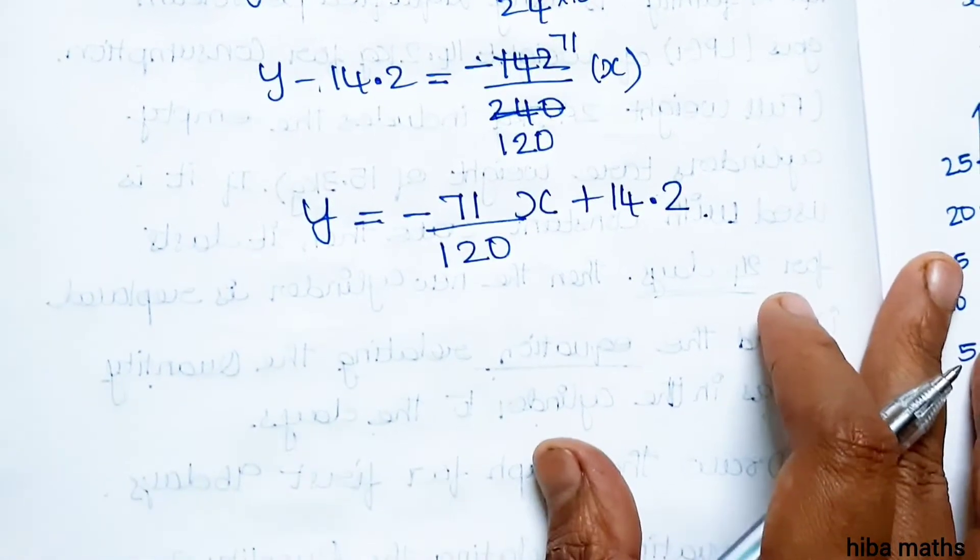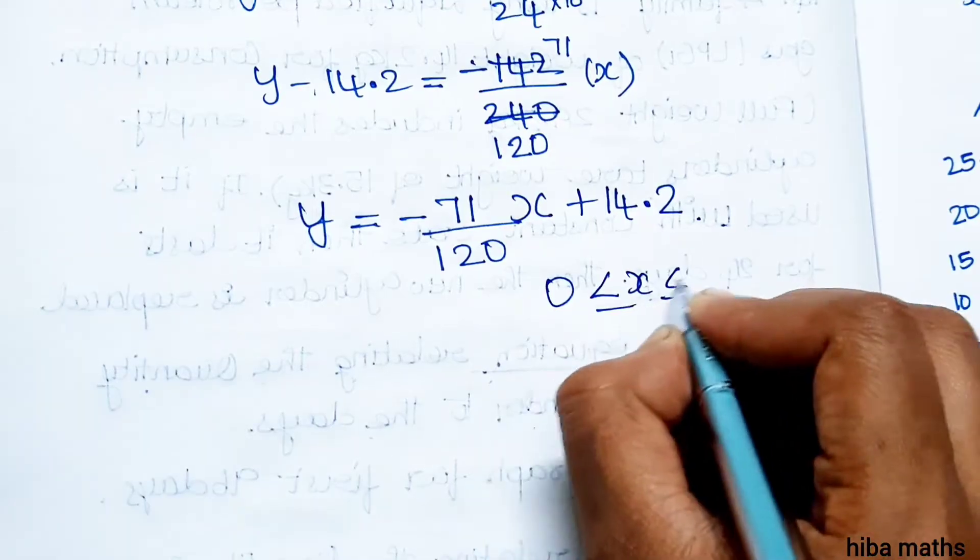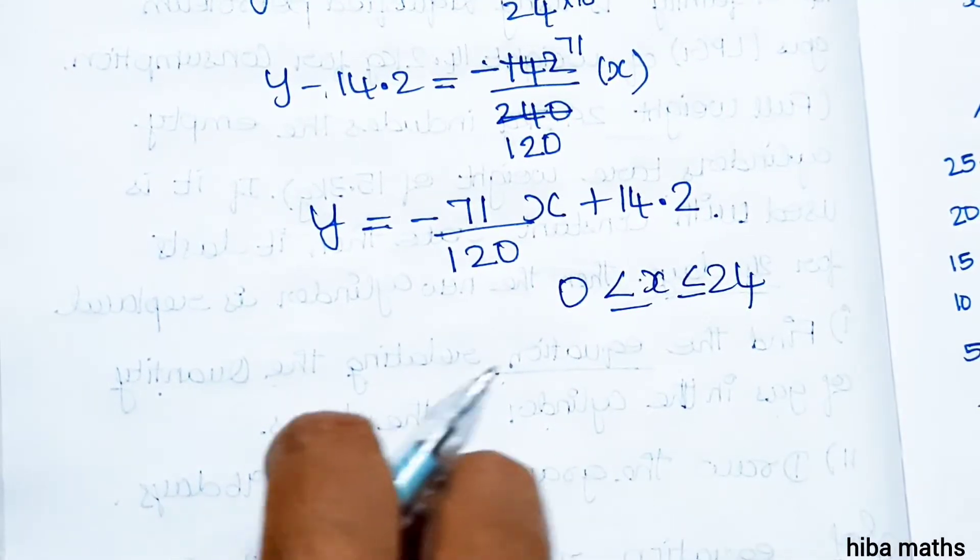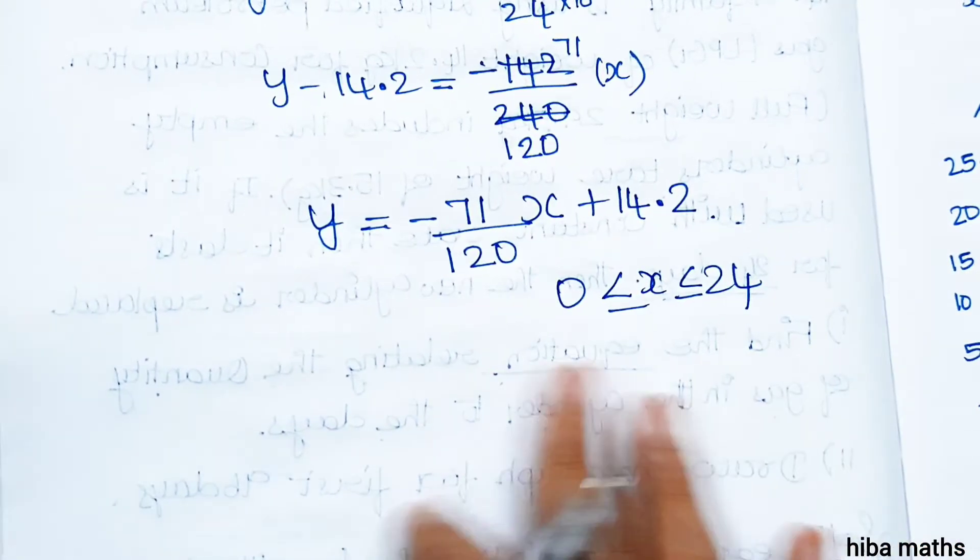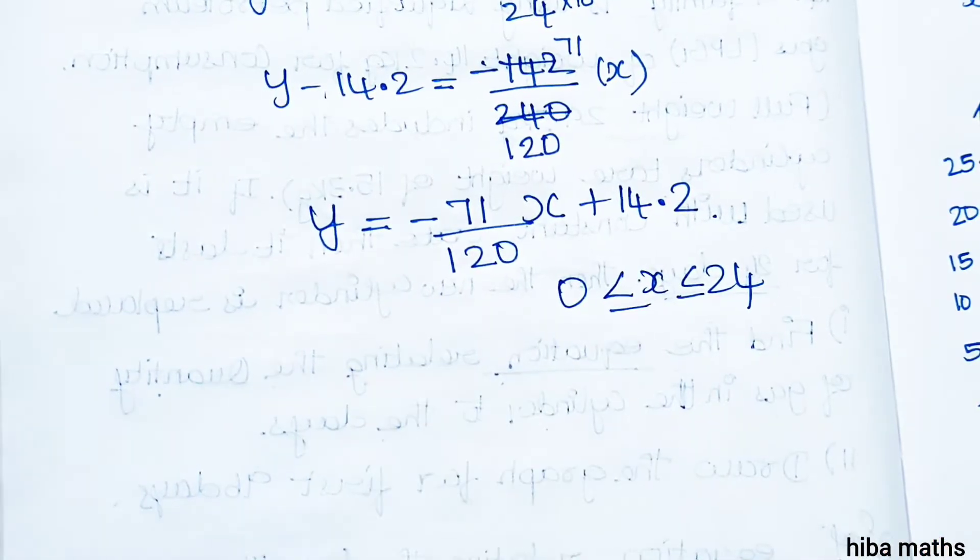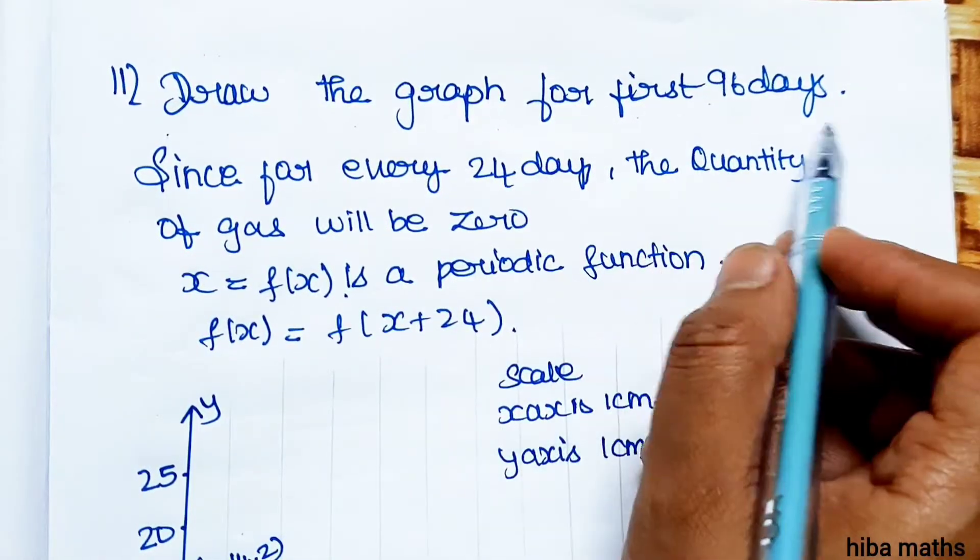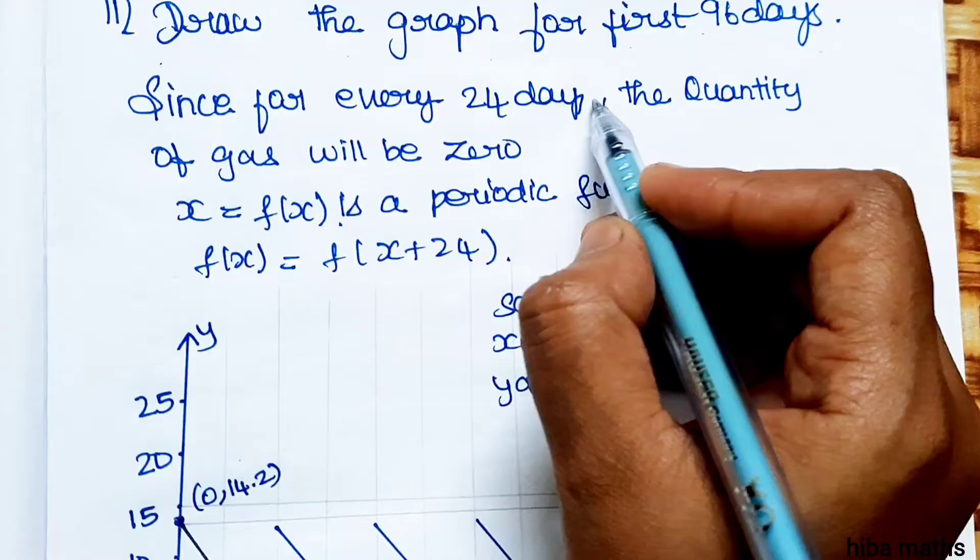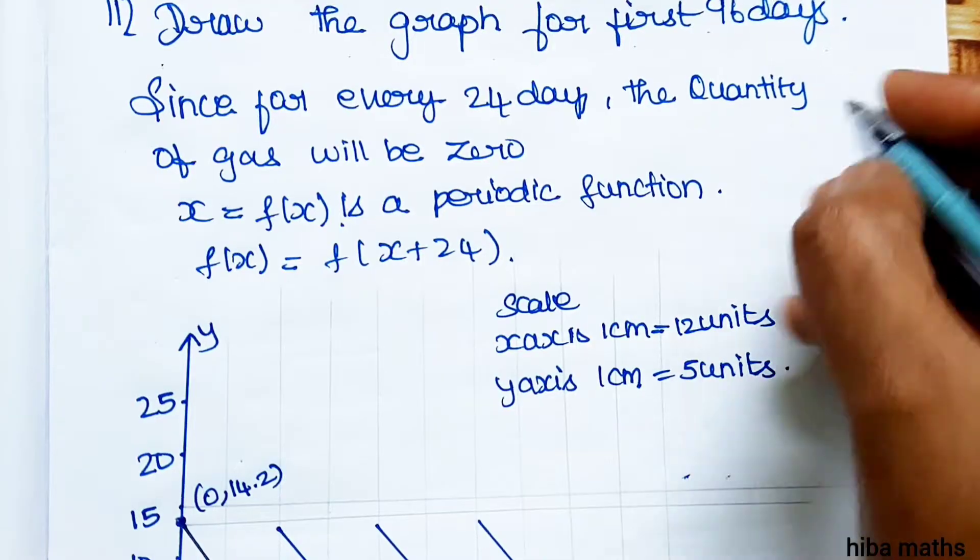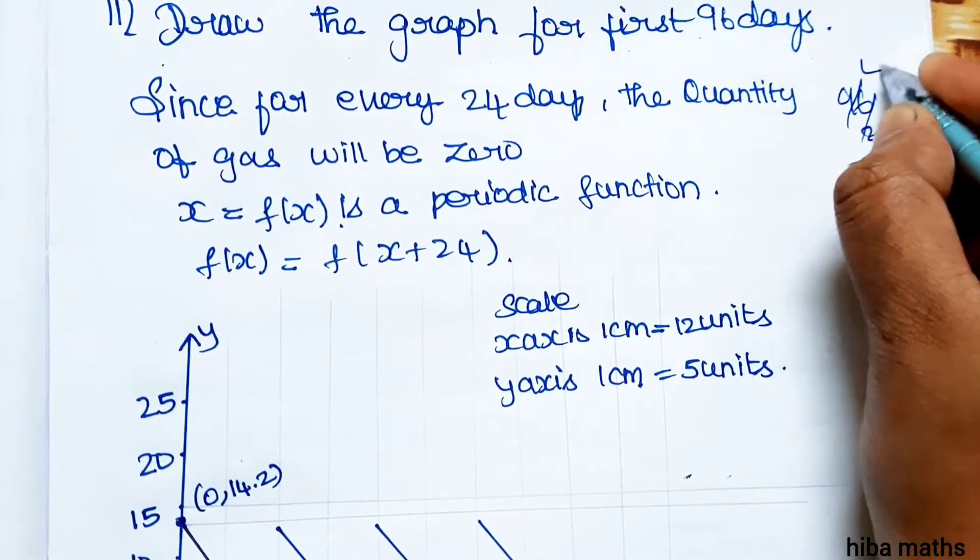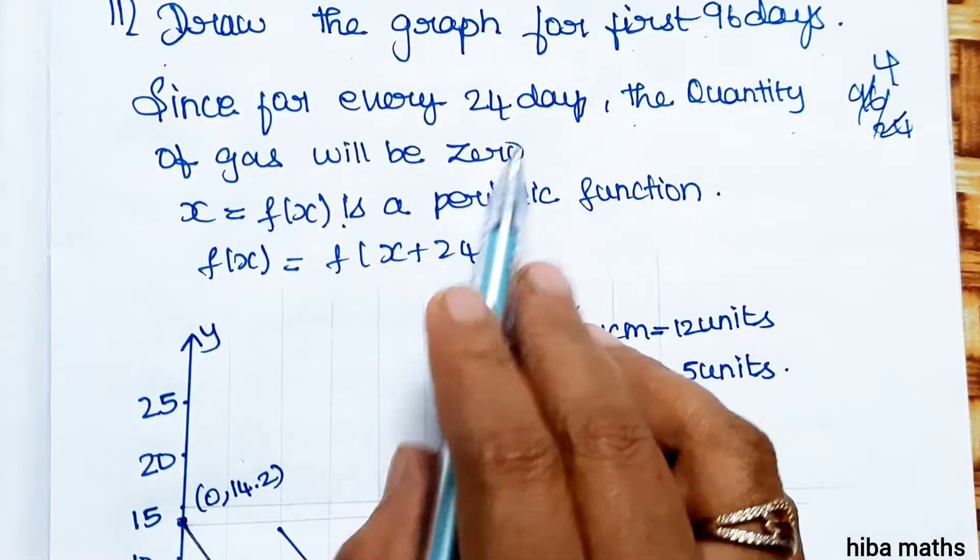This is the gas consumption equation. When x = 0, y = 14.2. When x = 24, y = 0. So this is the equation.